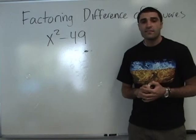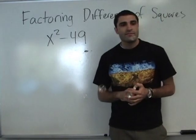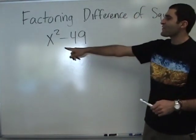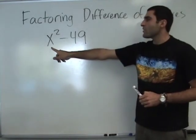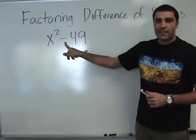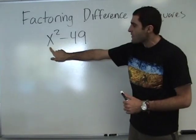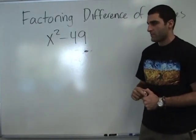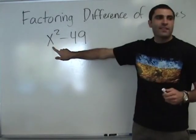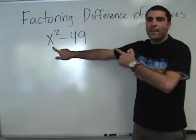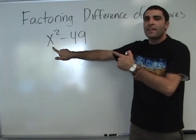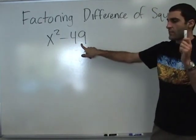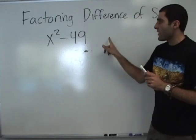Not exactly. Okay. So the way to factor difference of squares is we look for a difference — a minus sign — and we look for this being a perfect square and this being a perfect square. Is this a perfect square? As in something times something makes it. What times what makes X squared? X times X. What times what makes 49? 7 and 7. So this is a difference of squares.